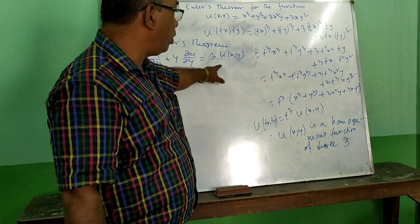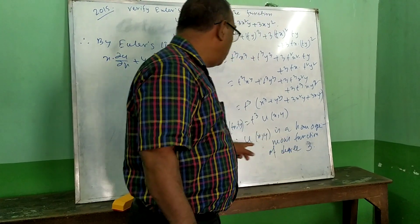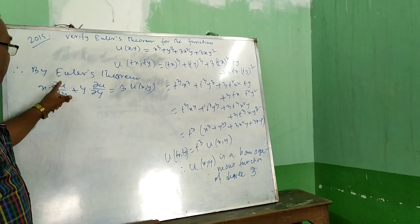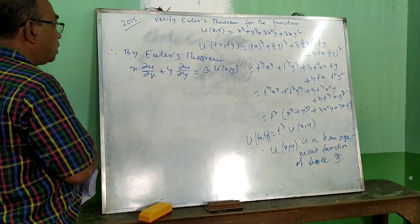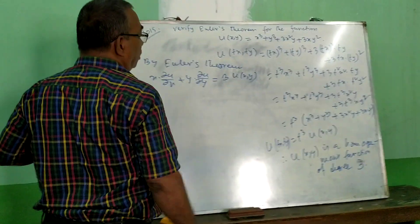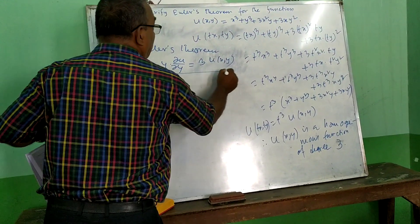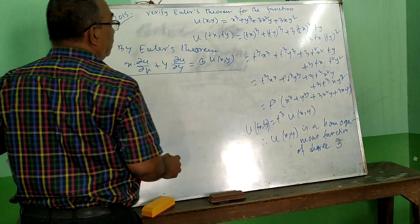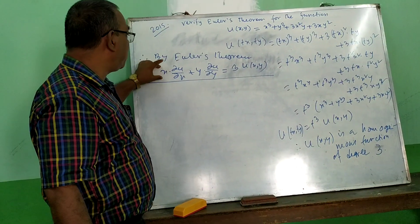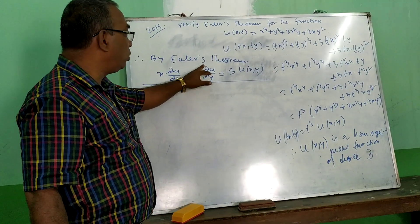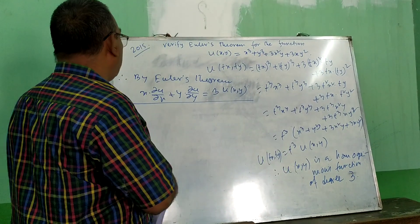Why 3·U(x,y)? Because the degree is 3. So the question is to verify Euler's theorem. This is one part; now we have to do the second part — that is, by partial differentiation, we have to prove x·(∂u/∂x) + y·(∂u/∂y) = 3·U(x,y).